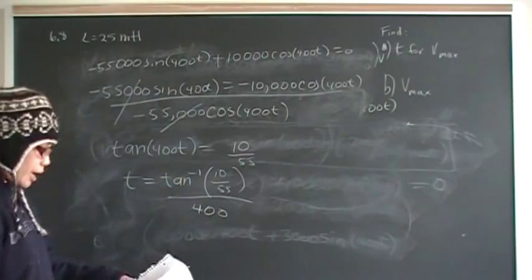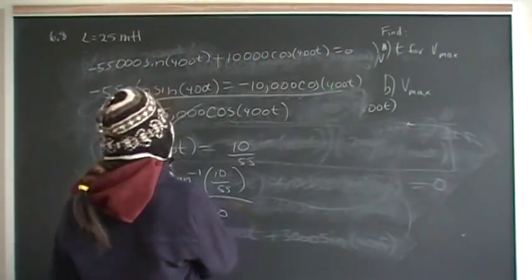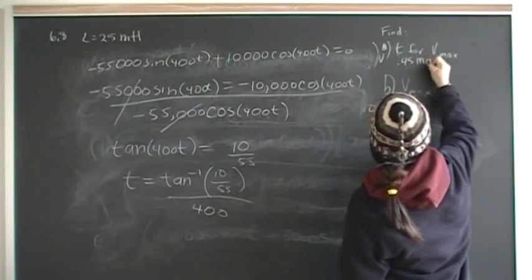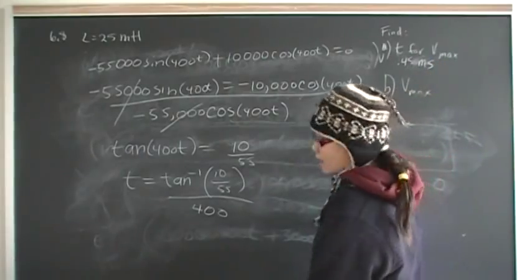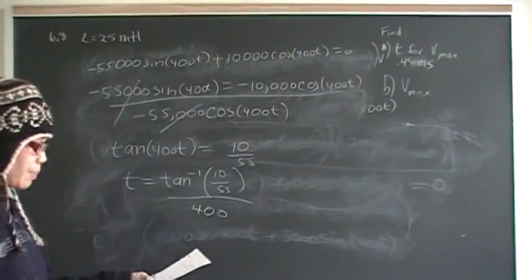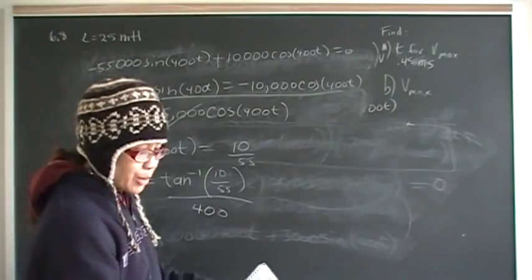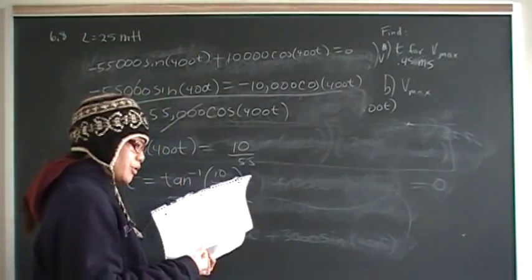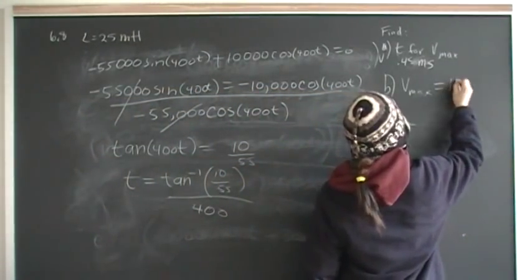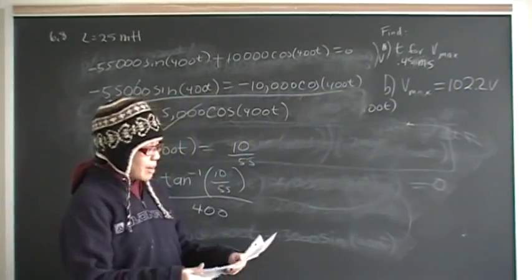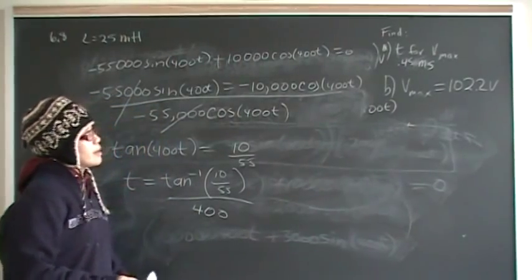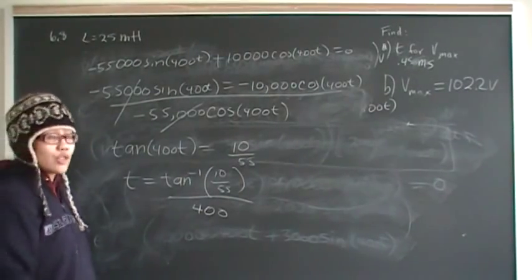When you put that into your calculator, you'll find that for part A, the time is approximately 0.45 milliseconds. For part B, you simply plug that time back into the voltage function found in part A, and when you do that, you should find a Vmax of approximately 2.2 volts. You can go back in the video to find the voltage function. That's the answer to problem number 8. Thank you.